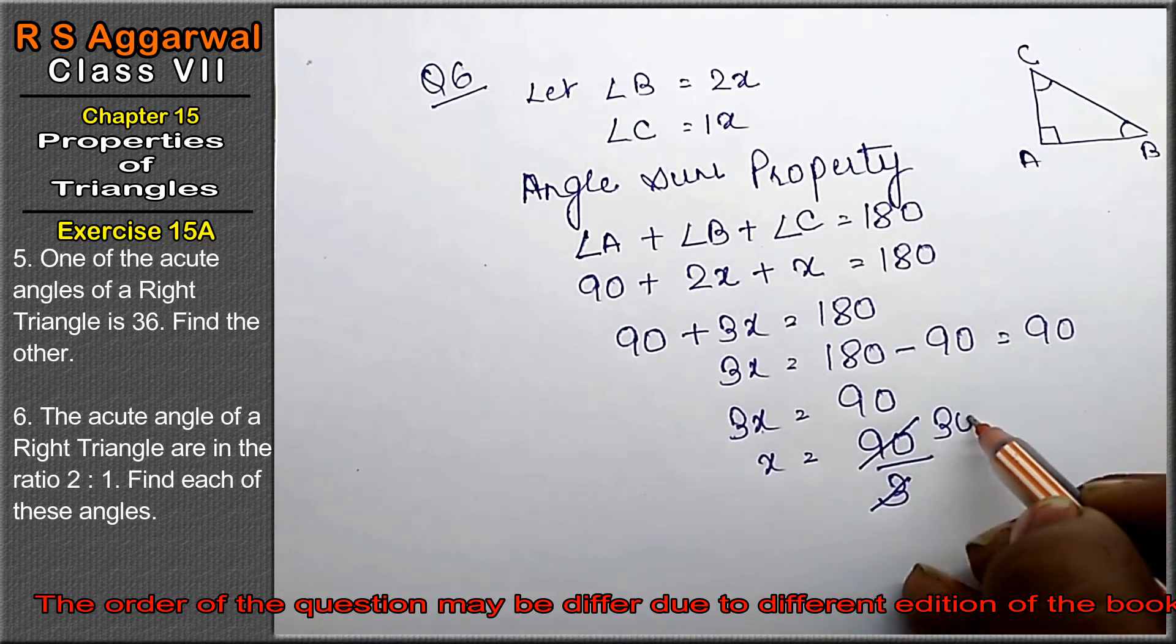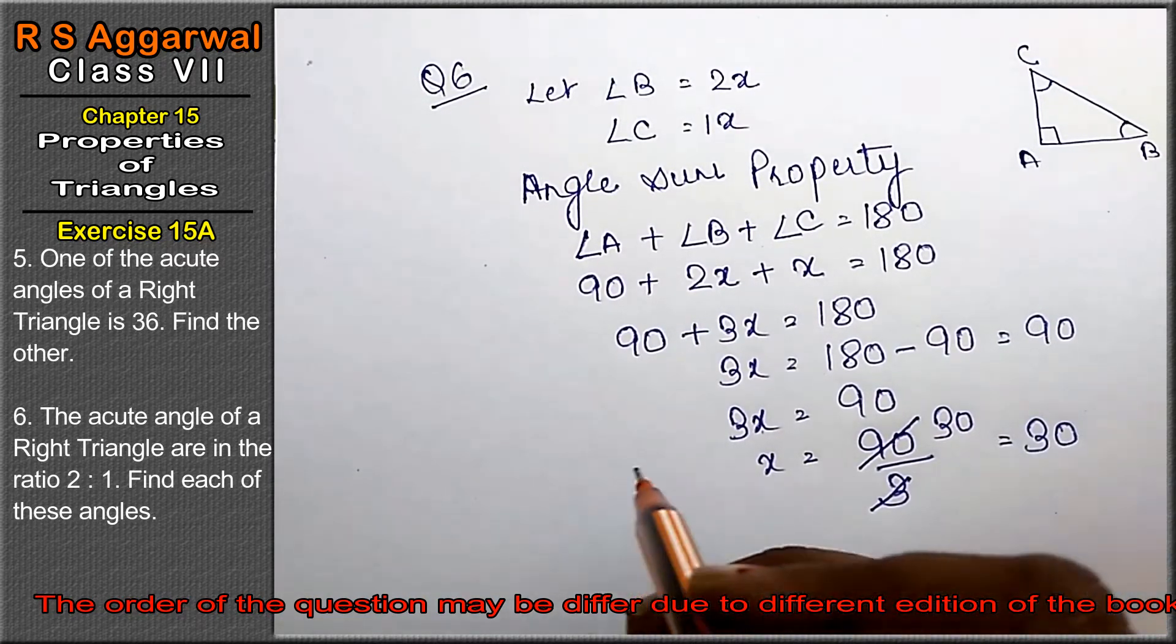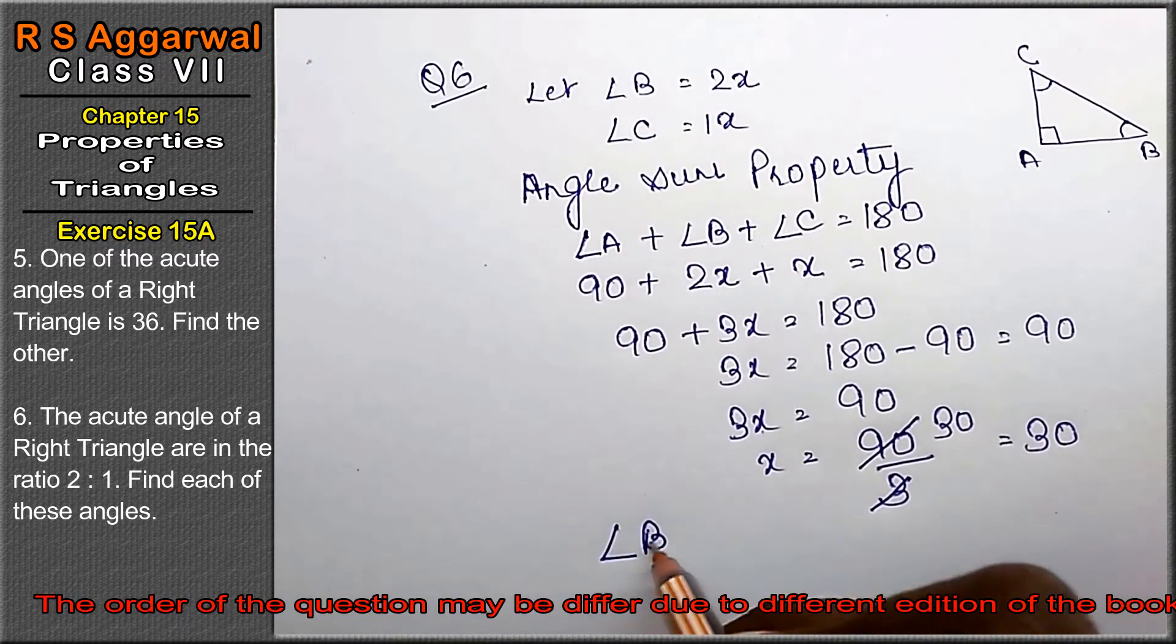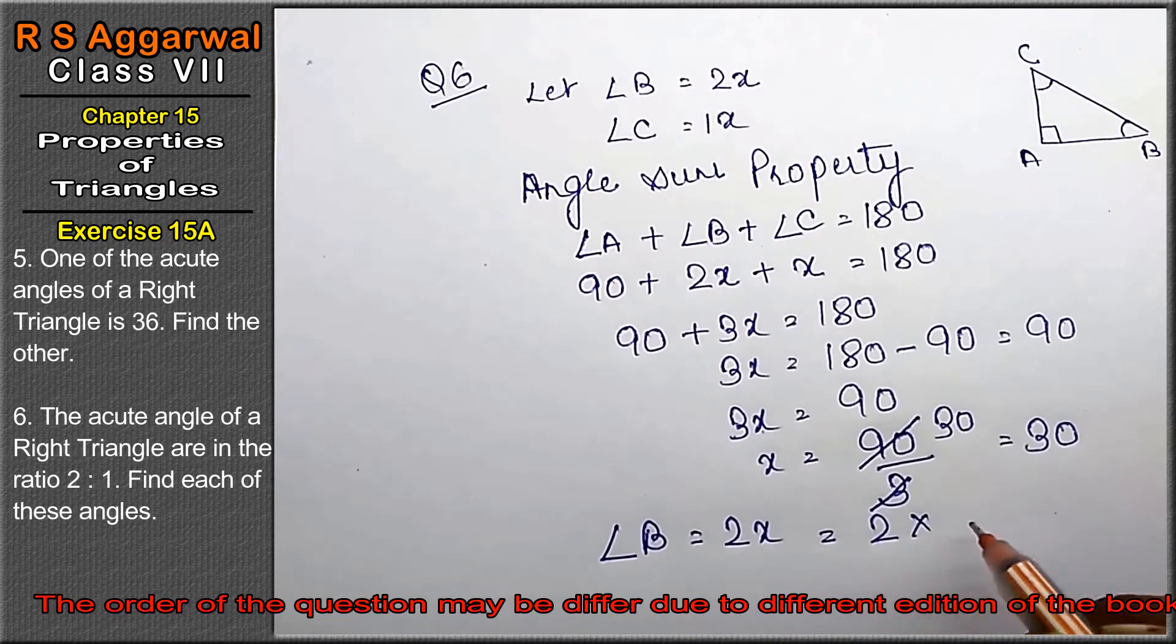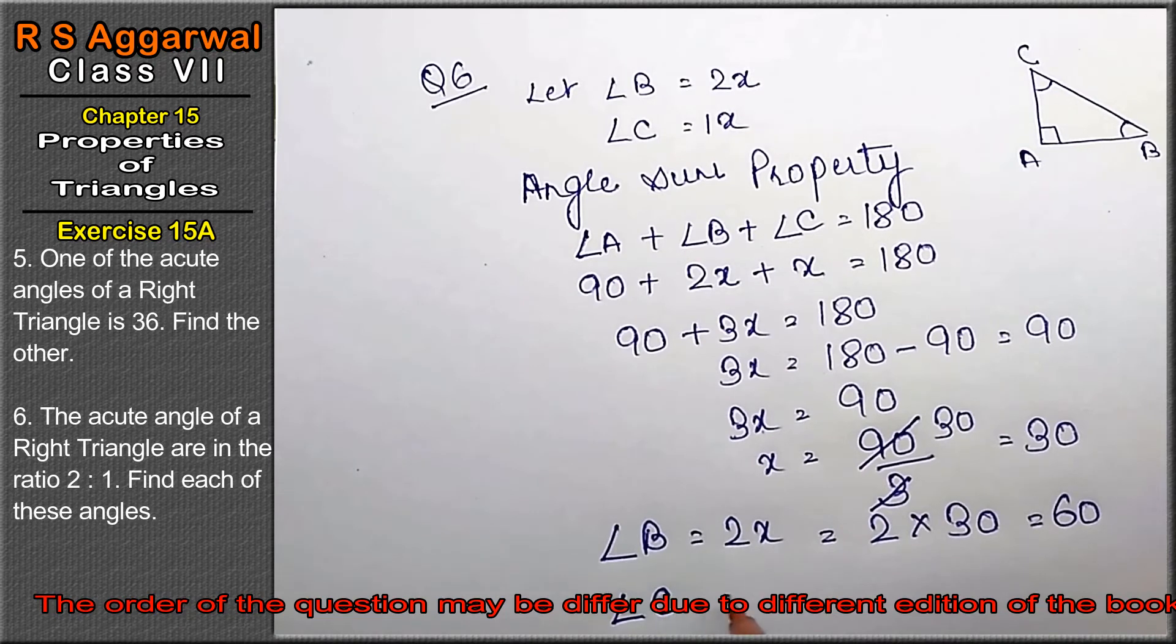Angle B is 2x, that means 2 times 30 equals 60 degrees.